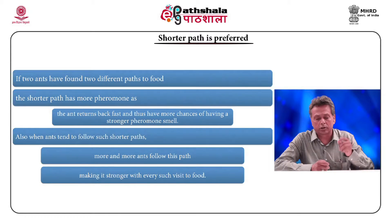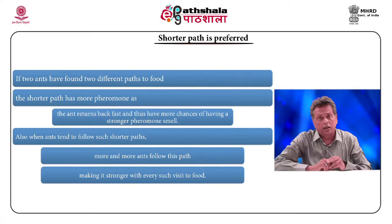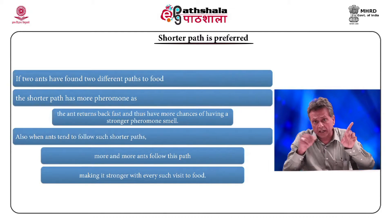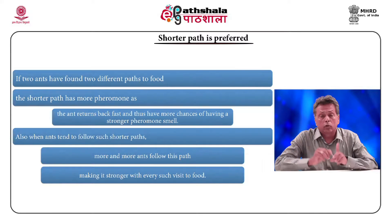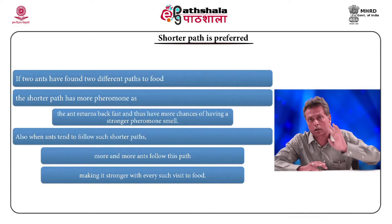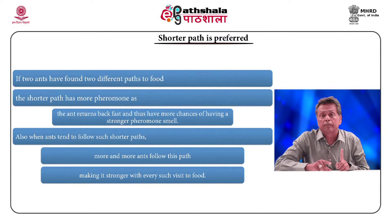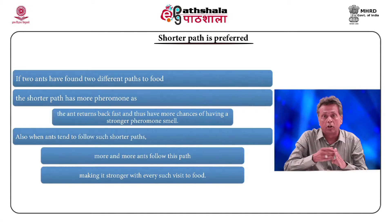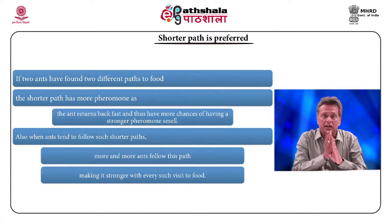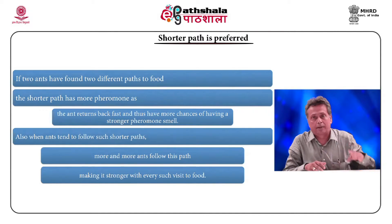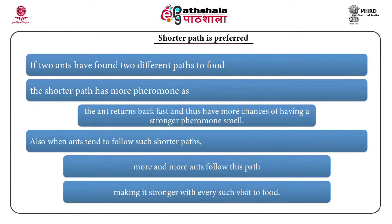Let me explain how ants find the shortest path. Suppose two ants travel different paths to the same food source — one shorter, one longer. In 10 seconds, the ant on the shorter path makes 5 trips, while the one on the longer path makes only 4. The amount of pheromone on the shorter path is more, and it is also more recent. This makes the shorter path more attractive, so the third ant will likely follow it and add to that pheromone value.